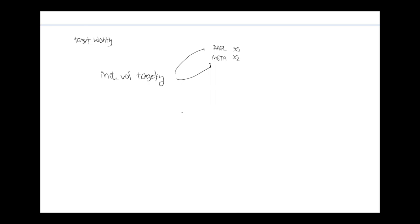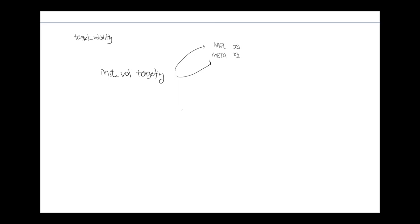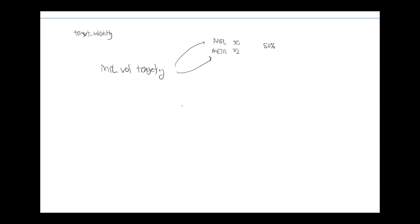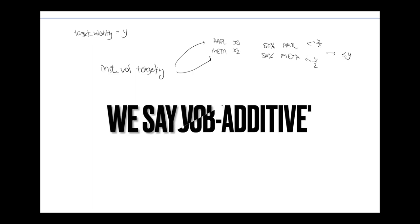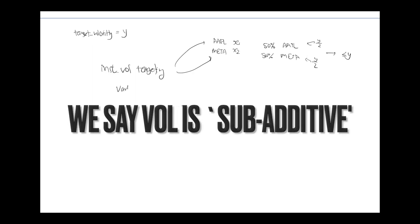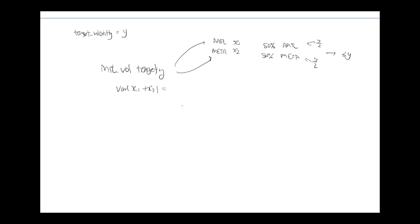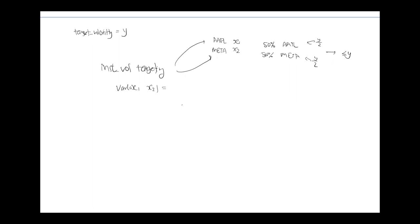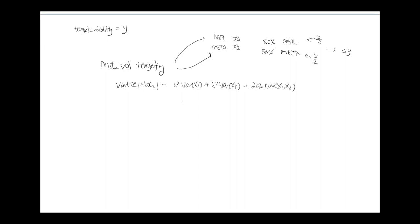It's important to note that when we do this, there is a loss of volatility. For example, if we allocate 50% to Apple and 50% to Meta, and our target volatility was Y, we allocate Y over 2 to each individual position. But when we assign these target volatilities to each of the two positions, the overall volatility is actually going to be less than or equal to Y. This is the concept of imperfect correlations. Taking two random variables A and B: variance equals A² · Var(X1) + B² · Var(X2) + 2AB · Cov(X1, X2).